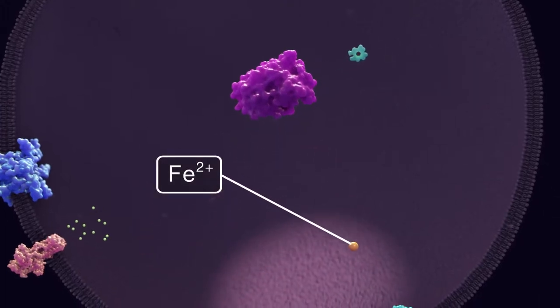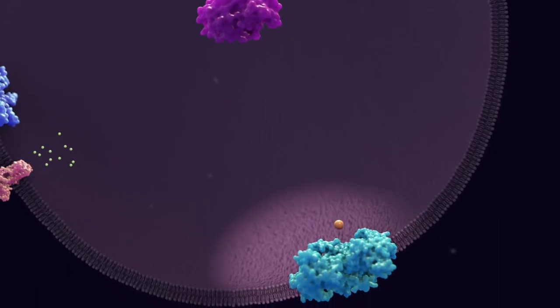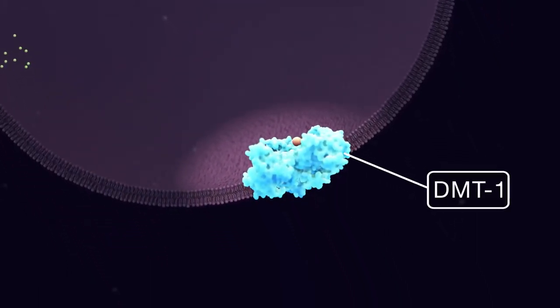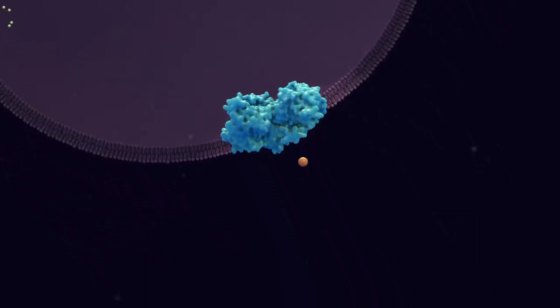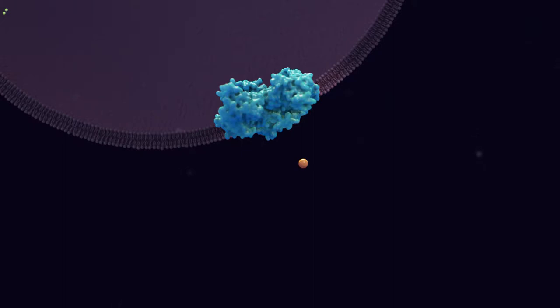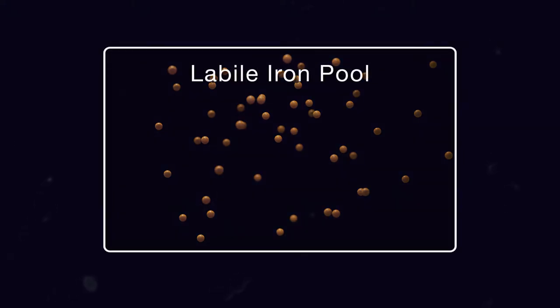The iron remains in its reduced ferrous state as it is transported out of the endosome by the DMT-1 duodenal metal transporter-1 iron transporter. The reduced ferrous iron in the cytosol becomes part of the labile iron pool which contains iron-dependent enzymes and iron binding proteins.